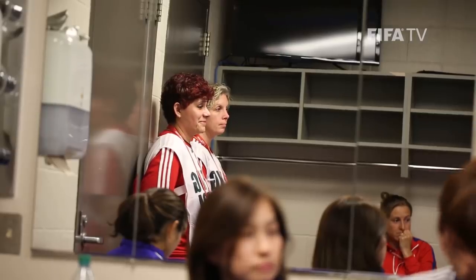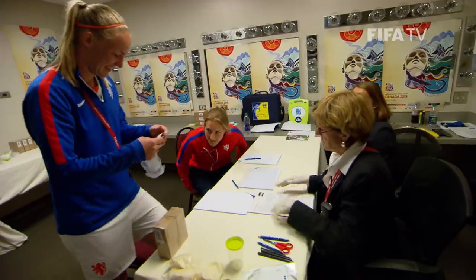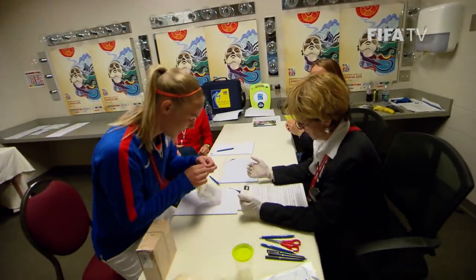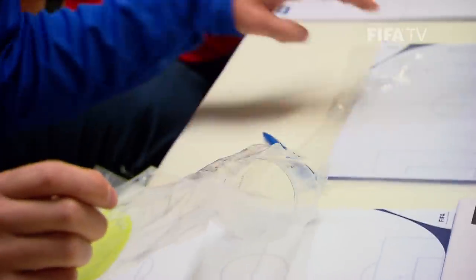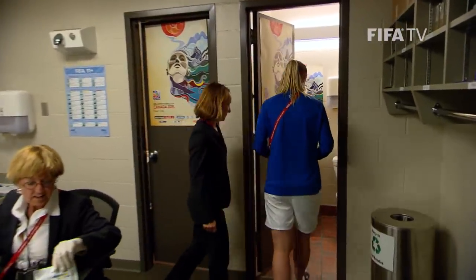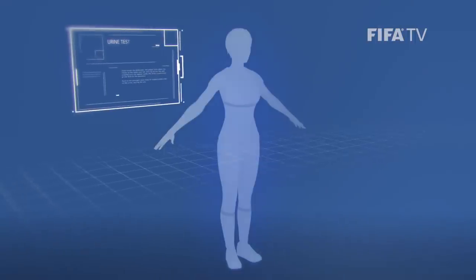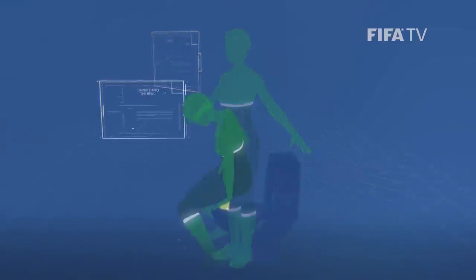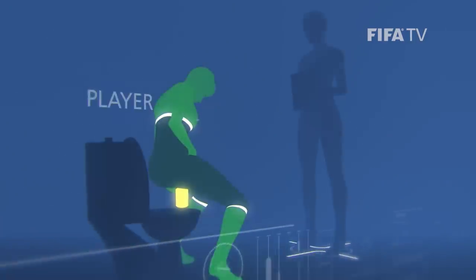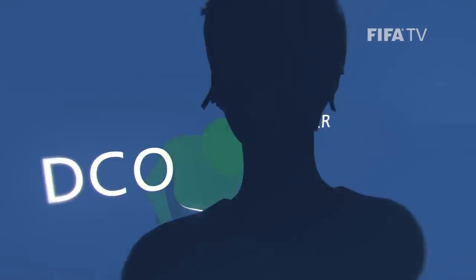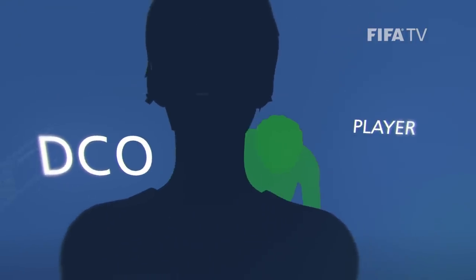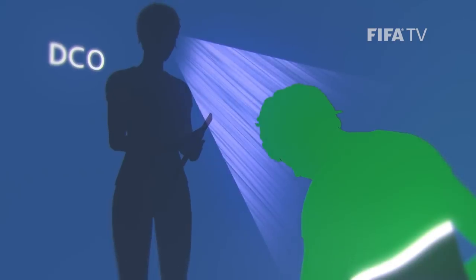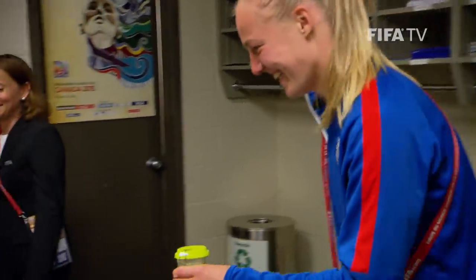For urine testing, the players are given water to drink, and when they are ready to give their sample, they enter the Doping Control Room. According to the FIFA Anti-Doping Regulations, the player should handle the samples herself. The player is accompanied to the bathroom by the DCO or the assistant. After pulling her shorts down to her knees and her shirt up to her bra, the player urinates into the beaker under the supervision of the DCO or the assistant. At all times, the DCO or the assistant must have an unobstructed view of the urine leaving the player's body. The minimum amount of urine required is 90 ml.